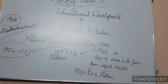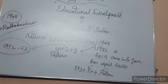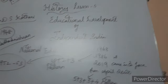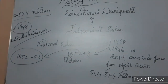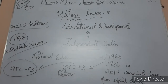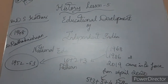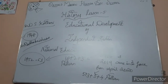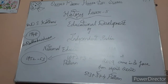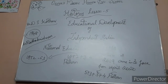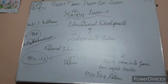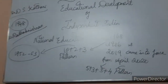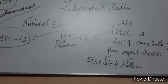The Secondary Education Commission suggested new organization patterns, improvement in the quality of textbooks, curriculum, and methods of teaching. An Education Commission under the chairmanship of Dr. D.S. Kothari — known as the Kothari Commission — was appointed by the Government of India in 1964. It emphasized free and compulsory primary education for children up to the age of 14 years, and recommended the educational structure of 10+2+3.